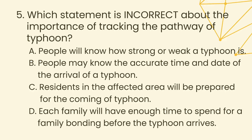Question 5. Which statement is INCORRECT about the importance of tracking the pathway of a typhoon? A. People will know how strong or weak a typhoon is. B. People may know the accurate time and date of the arrival of a typhoon. C. Residents in the affected area will be prepared for the coming of a typhoon. D. Each family will have enough time to spend for family bonding before the typhoon arrives.